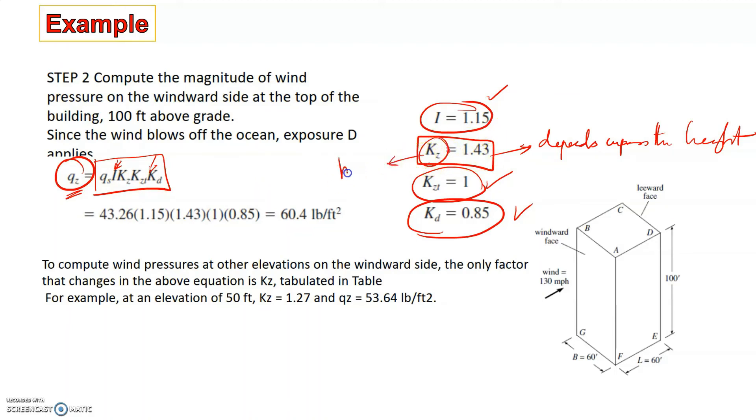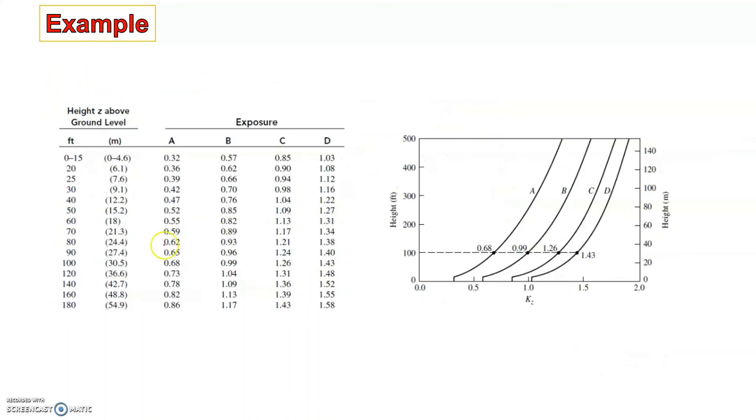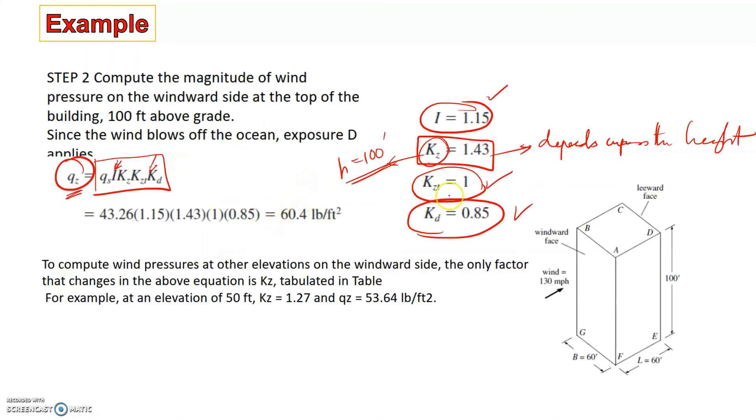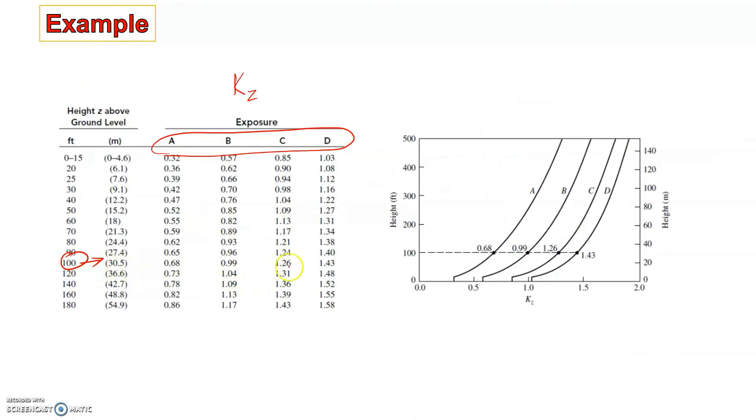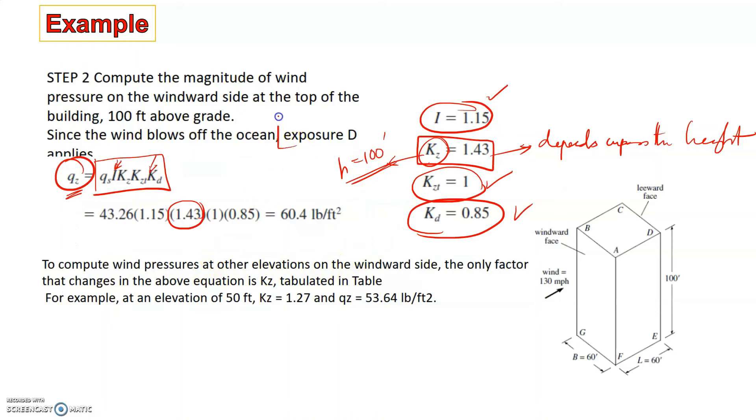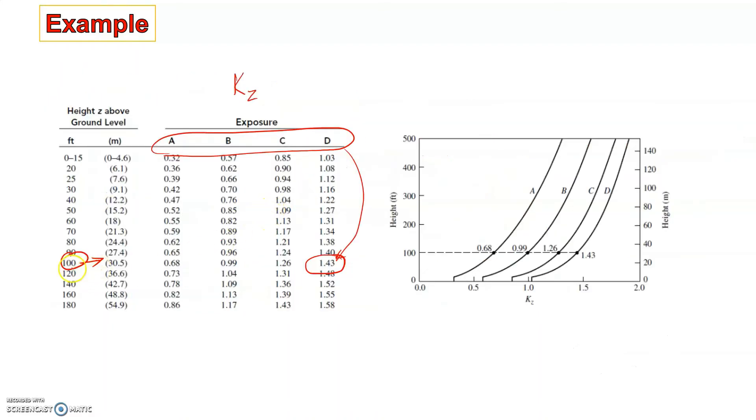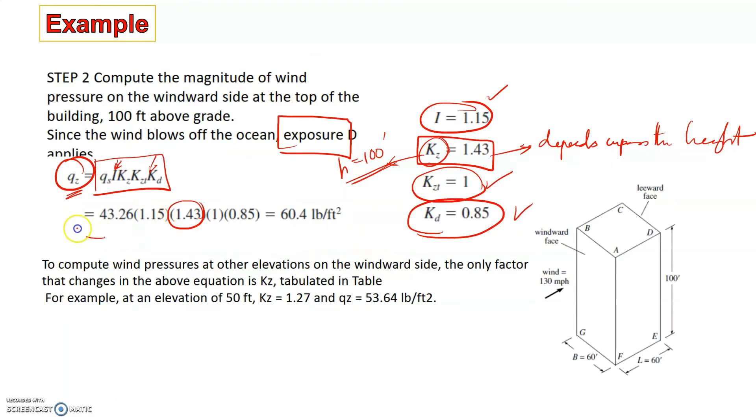This is taken from this particular chart, where we take a value of KZ corresponding to the exposure condition. In this case, we see that the value of KZ is 1.43, and that corresponds to classification D. So it is told that the classification is D. What we do is we go into this table, we go into the height that is required, we go into the exposure that is given to us, and then just find the value which corresponds to this. Once this is found, we can substitute all of this into this equation and find the value of Qz.